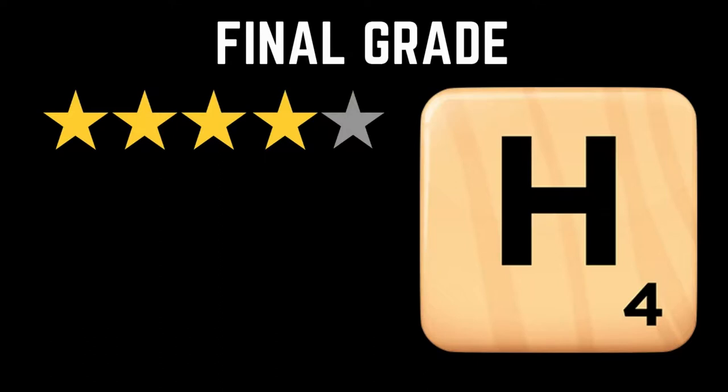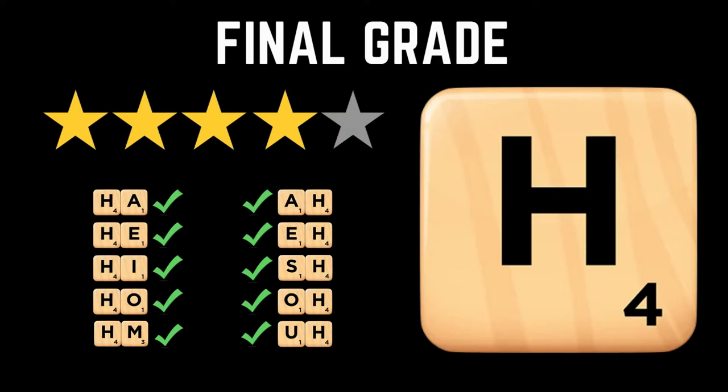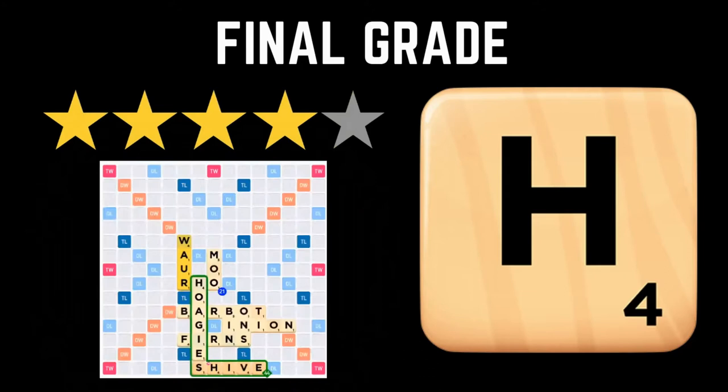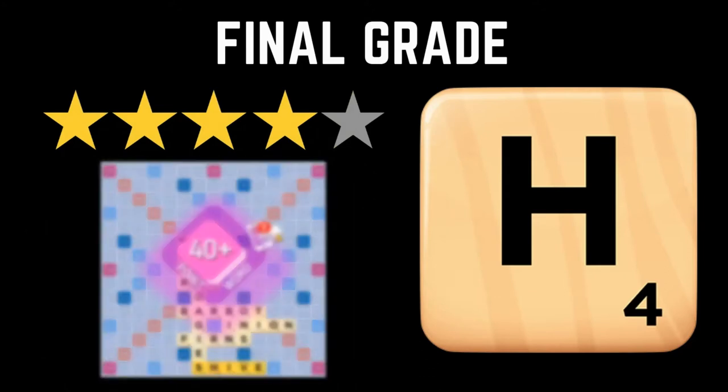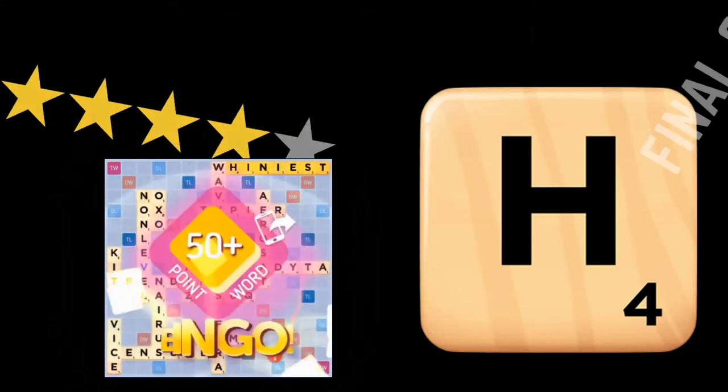The H is a tile that both newcomers to the game and veterans should be able to use effectively. Its frequency in two-letter words means that you can use it quickly without studying the dictionary, but for those willing to go the extra mile, the H will become an even more effective tool for scoring in the 30 to 50-point range with a healthy dose of bingos mixed in.